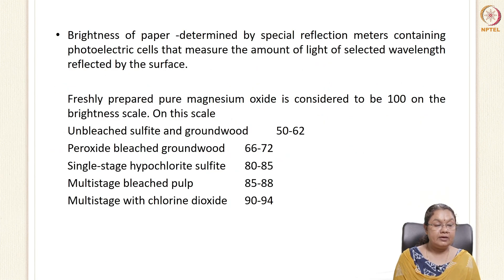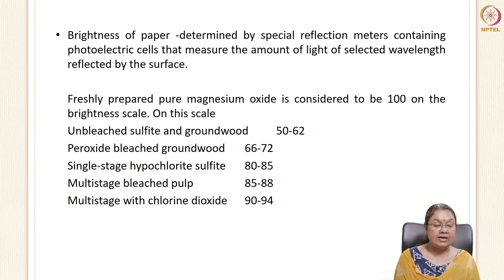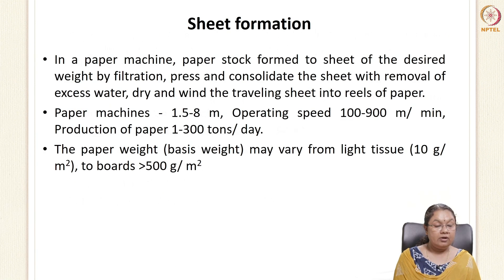Brightness of paper is determined by special reflection meters with photoelectric cells that measure the amount of light of selected wavelengths reflected by the surface. Pure magnesium oxide is the standard with a value of 100. Unbleached sulfide and groundwood score 50–62; peroxide-bleached groundwood 66–72; single-stage hypochlorite bleach 80–85; multi-stage bleach pulp 85–88; and multi-stage with chlorine dioxide 90–94.